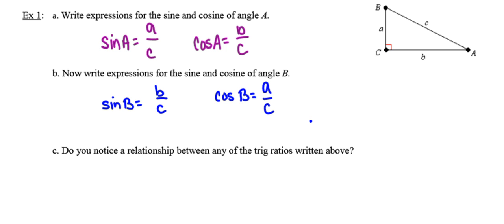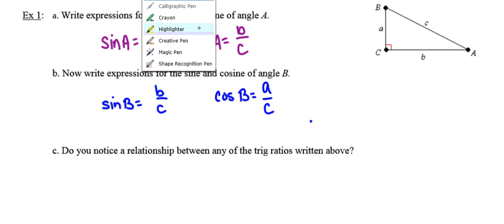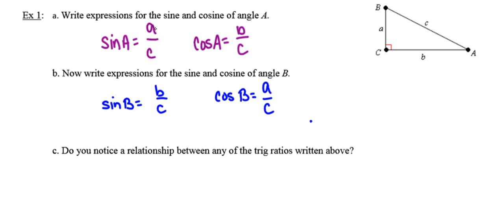And then in part C, they want us to take a look at what we've written and they're asking us if we notice a relationship between any of the trig ratios that we've written above. Well, the answer to that, I hope, is yes, because the sine of angle A is equivalent to the cosine of angle B. And likewise, the cosine of angle A is equivalent to the sine of angle B.